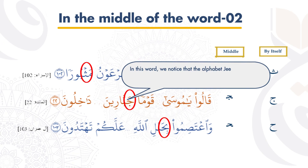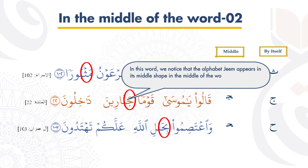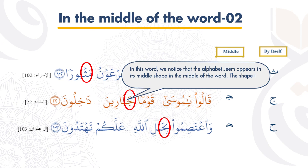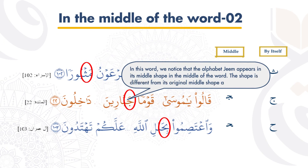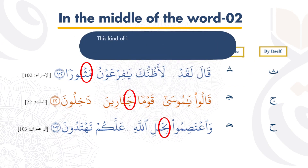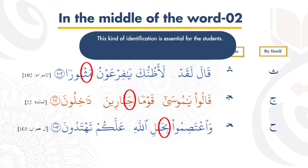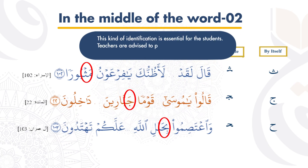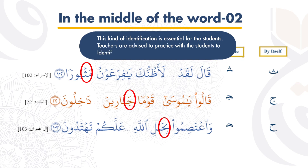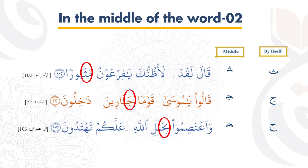In this word, we notice that the alphabet ha appears in its middle shape in the middle of the word. The shape is different from its original middle shape appearance. This kind of identification is essential for the students. Teachers are advised to practice with the students to identify the stated letter as per its shape.